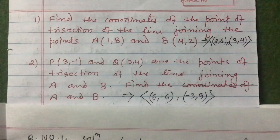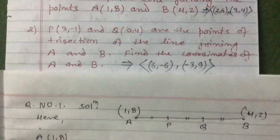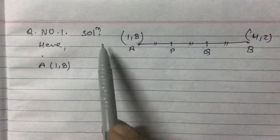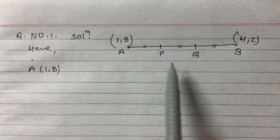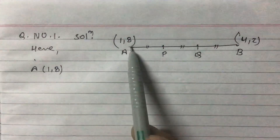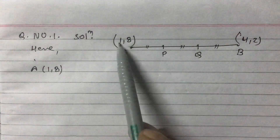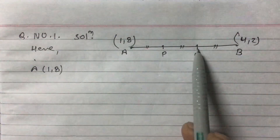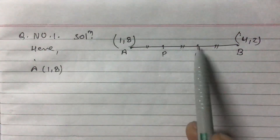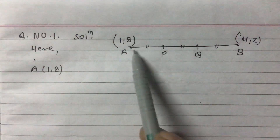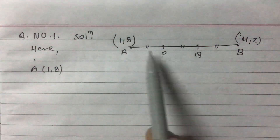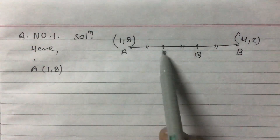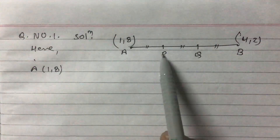Question number one solution: A and B have the two points (1, 8) and (4, 2). Let P and Q be the points of trisection of the line. Point of trisection means the points which divide the line into three equal parts. So if you have to divide a line into three equal parts, we cut it at two points — these are P and Q.